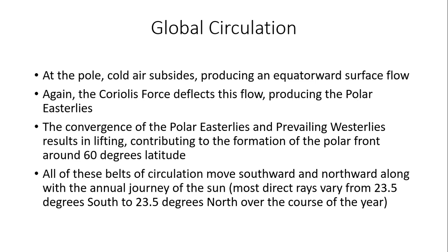Where the low-level convergence occurs between the polar easterlies and the prevailing westerlies, that results in an area of storminess, lifting air motion, clouds and precipitation — the polar front around 60 degrees latitude. All of these circulation belts generally move southward and northward along with the annual journey of the sun, which travels between 23.5 degrees south at the Tropic of Capricorn and 23.5 degrees north at the Tropic of Cancer throughout the year.